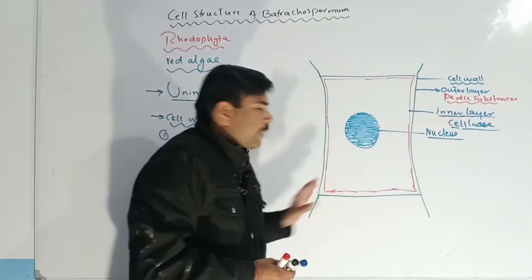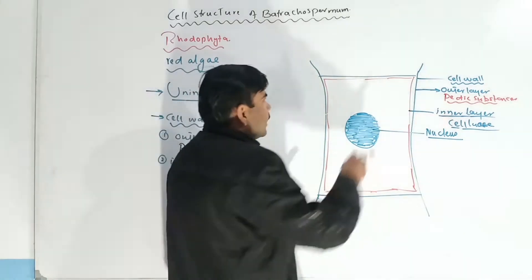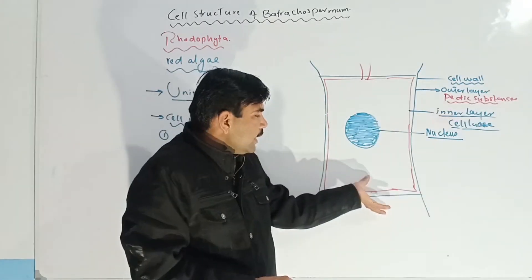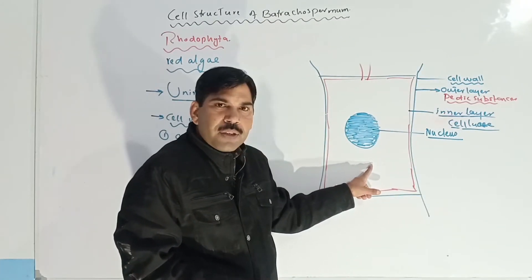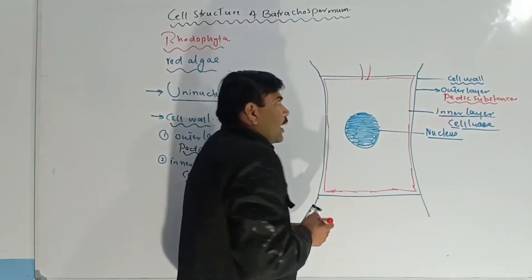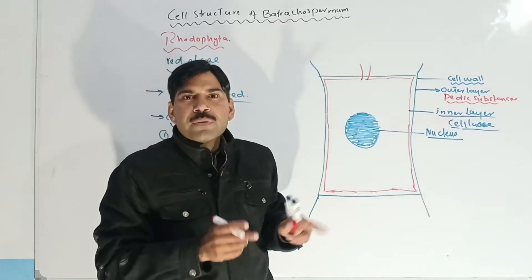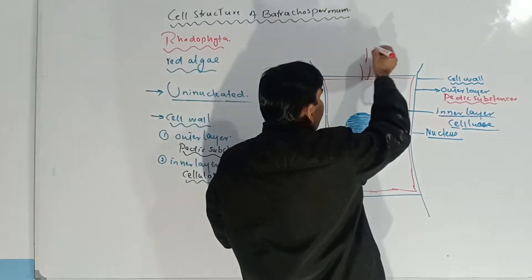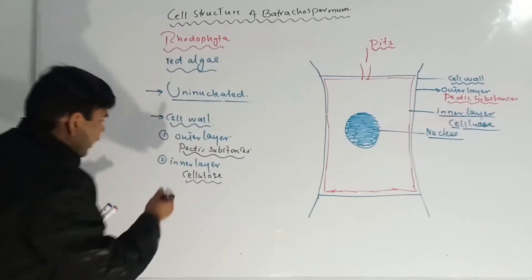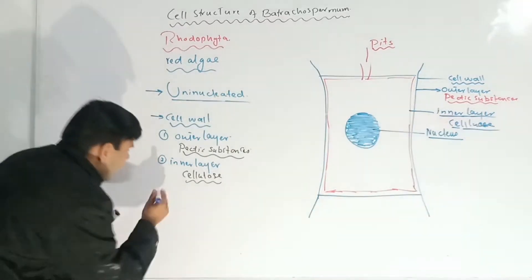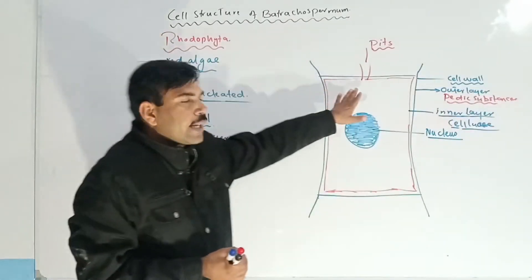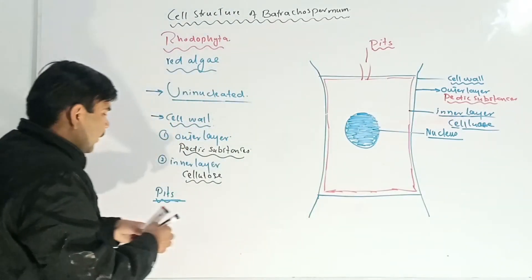Some other structures are present inside the cell wall. These are connections which connect the cytoplasm of one cell to the cytoplasm of another cell. These structures are known as pits. Pits are the cytoplasmic strands which connect the cytoplasm of one cell to the cytoplasm of another cell.